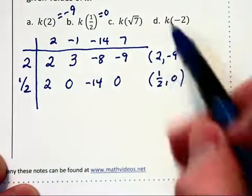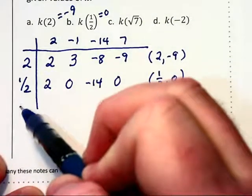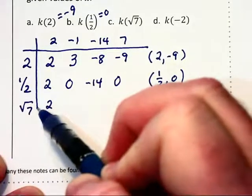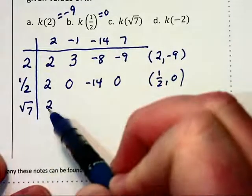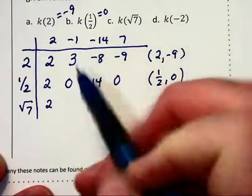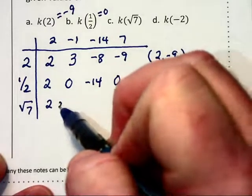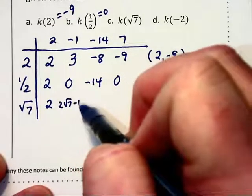Now it gets a little bit more interesting with that square root of 7. We bring down our 2. Root 7 times 2 is 2 root 7 minus 1. Well those are not like terms so we're just going to have to write that as 2 root 7 minus 1.